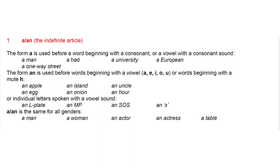All individual letters spoken with a vowel sound use AN — for example, an L plate, an MP. When I say MP, I'm not making the M sound; rather, it has a vowel sound, so we use AN rather than A.